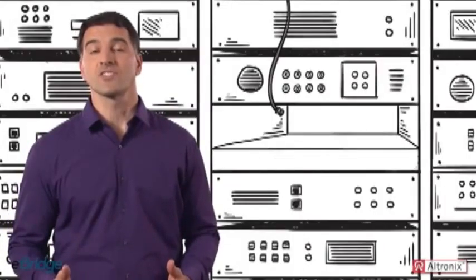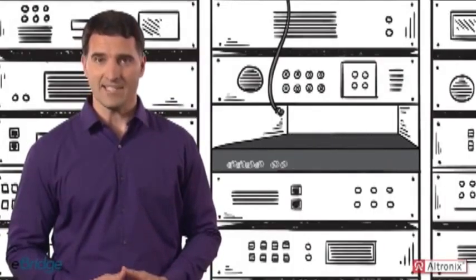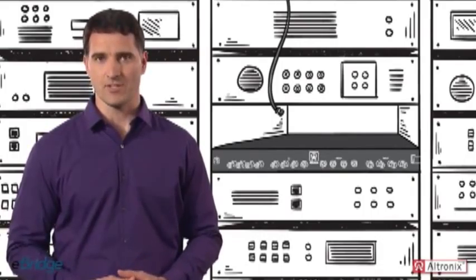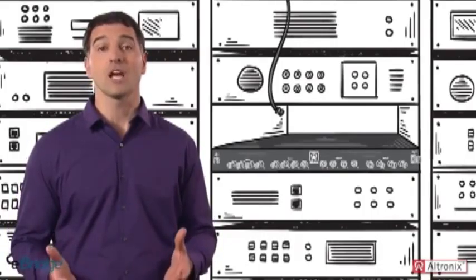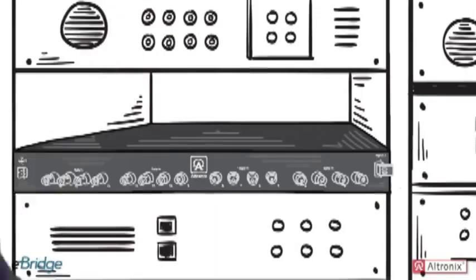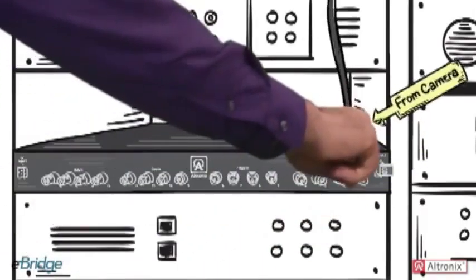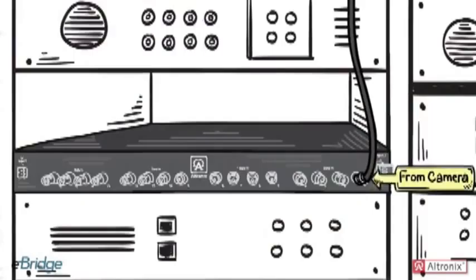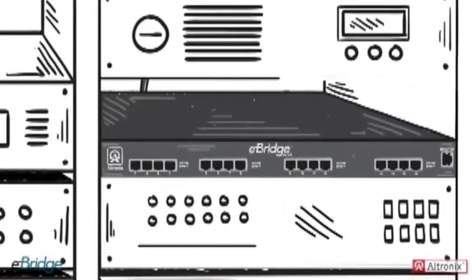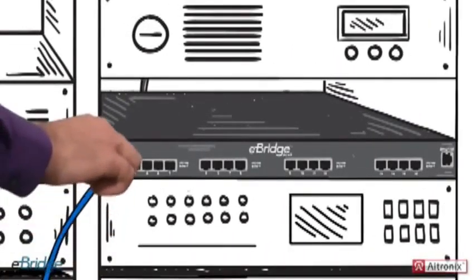And it's just as easy at the receiver. eBridge offers single, 4, 8, and 16 port receivers giving you the flexibility to accommodate multiple cameras or edge devices. Attach the coax cable that runs to the IP camera, then plug in the Ethernet cable and voila! You've just established IP connectivity using coax.